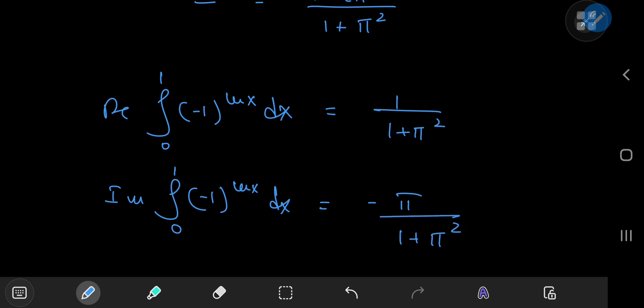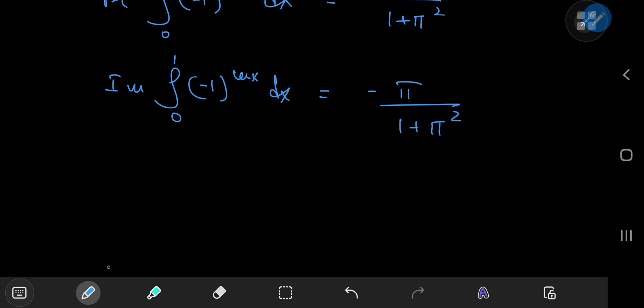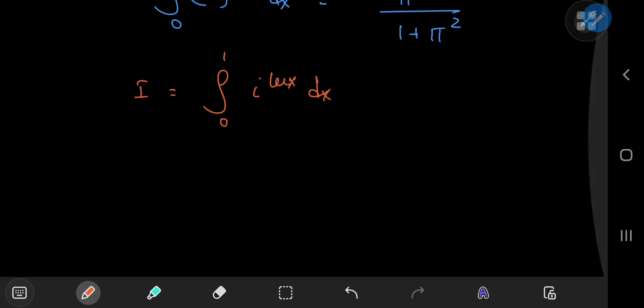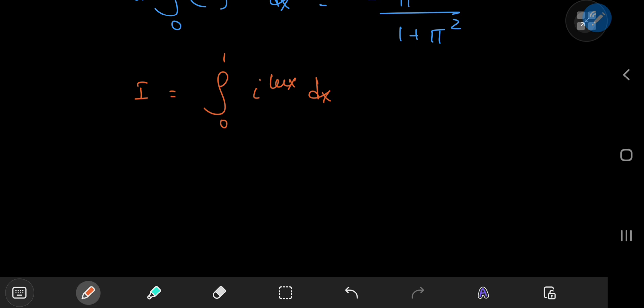And similarly we can expect cool results for another integral. Let's say we integrate from 0 to 1 i to the log x and this looks cool once again. So using Euler's formula we know that e to the i x equals cosine x plus i times sine x. So if you want just i on the right hand side this implies that you have to plug in x equal to pi by 2.